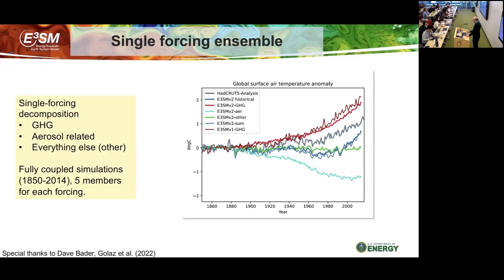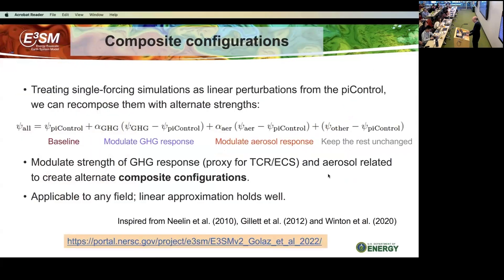The red line shows what happens to warming when you have only greenhouse gases. The green line shows mostly natural forcing — basically flat with some variability. The blue line shows the cooling when you have only aerosol forcing. Comparing the blue and red lines, they basically match in magnitude for most of the 20th century, which is why the model fails to warm until the very end. We concluded that we have to focus on aerosol forcing for the next version of the model.